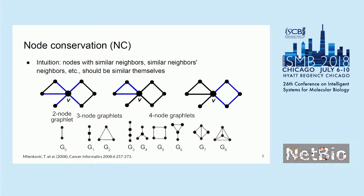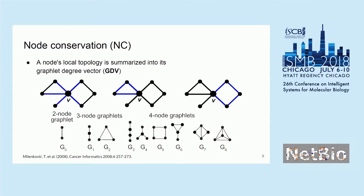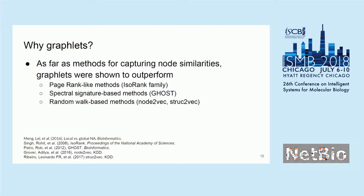This gives us what we call a graphlet degree vector for every node, where each position corresponds to a specific graphlet. To compare two nodes, we can compare the vectors, for example by calculating GDV similarity, or taking cosine similarity, or other measures. We consider graphlets for capturing node similarities because they are shown to outperform PageRank-like methods such as IsoRank, spectral signature-based methods like GHOST, and random walk-based methods like node2vec and struc2vec, at least in the context of network alignment.